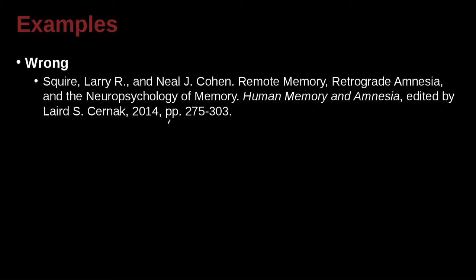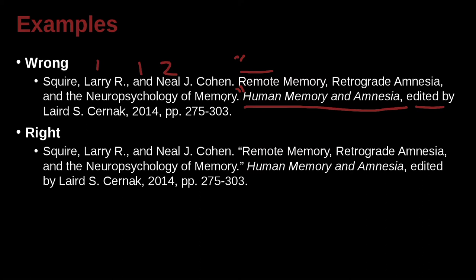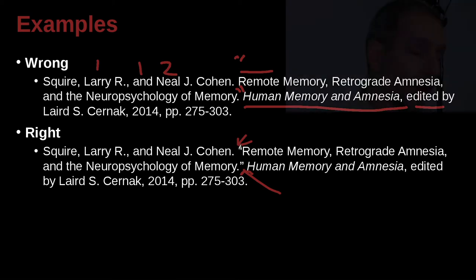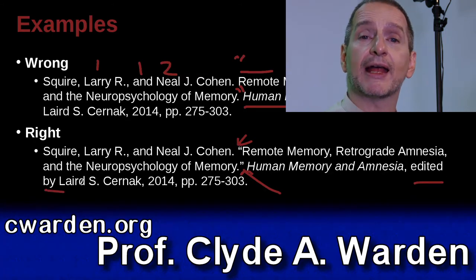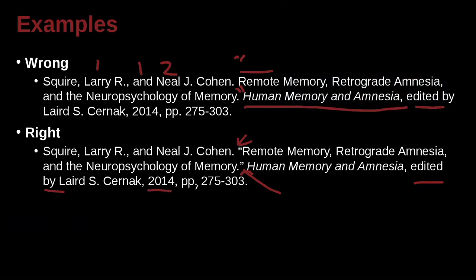Squire, Larry R., and Neil J. Cohn — first author and second author. We use 'and' spelled out, and since there are only two authors we can write them both out. The chapter title 'Remote Memory, Retrograde Amnesia, and Neuropsychology of Memory' is inside the book Human Memory and Amnesia, which is edited by someone. Since it's something smaller inside a container, it needs to be in quotation marks. We write opening and closing quotation marks, and the editor credit is written as 'edited by,' spelled out in full.